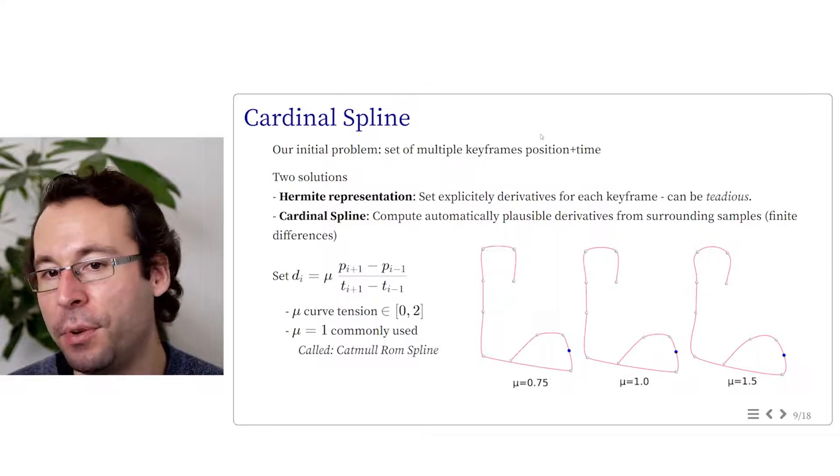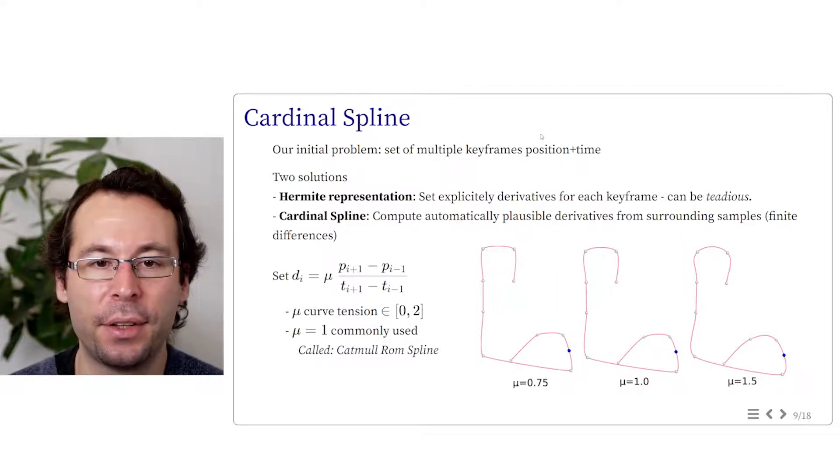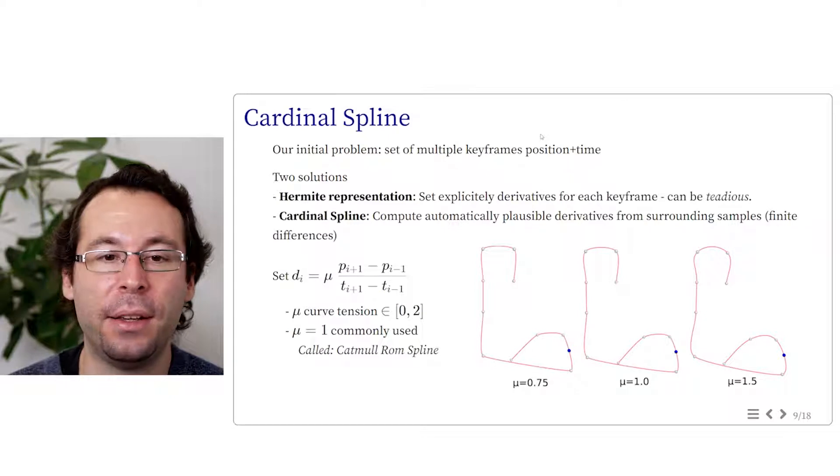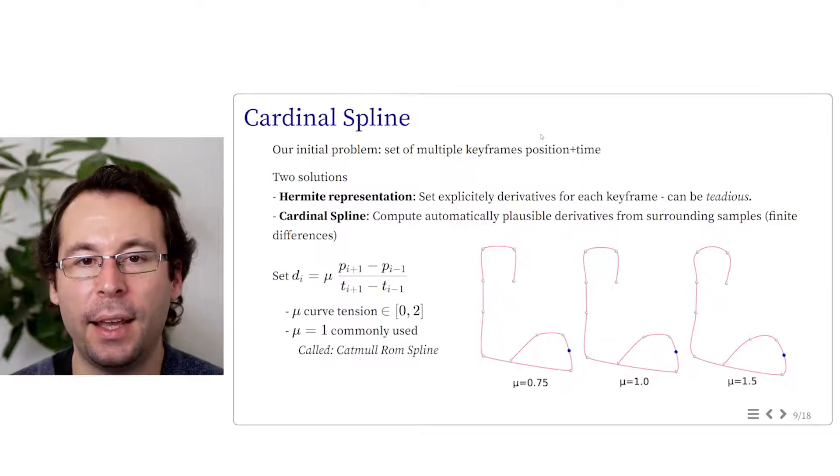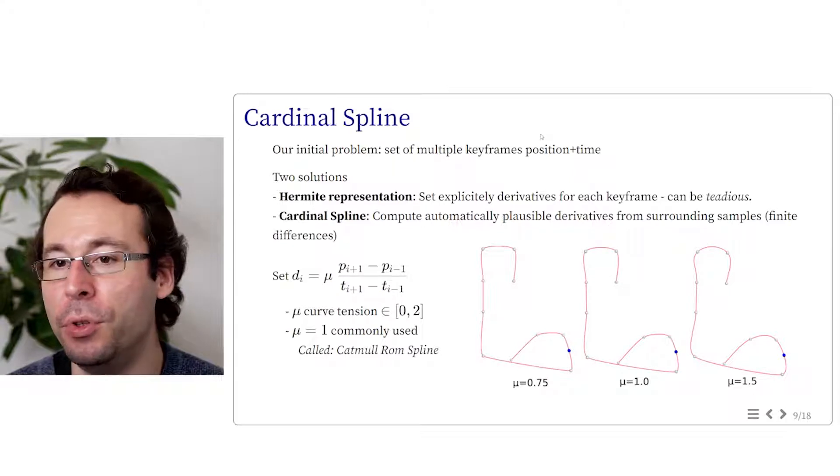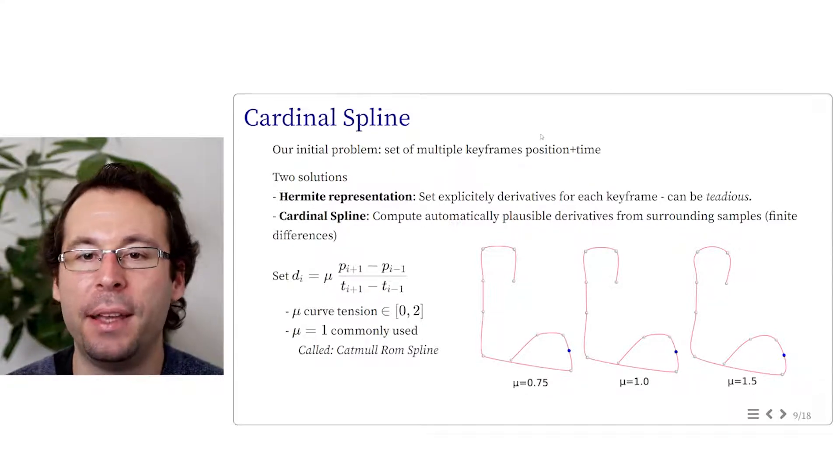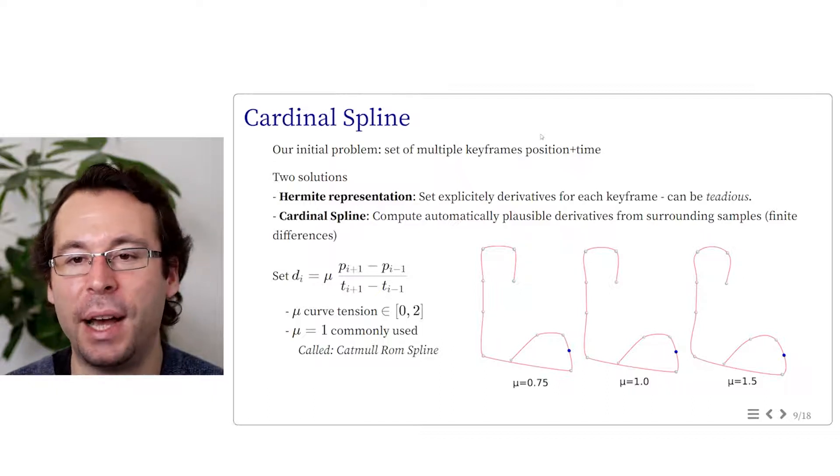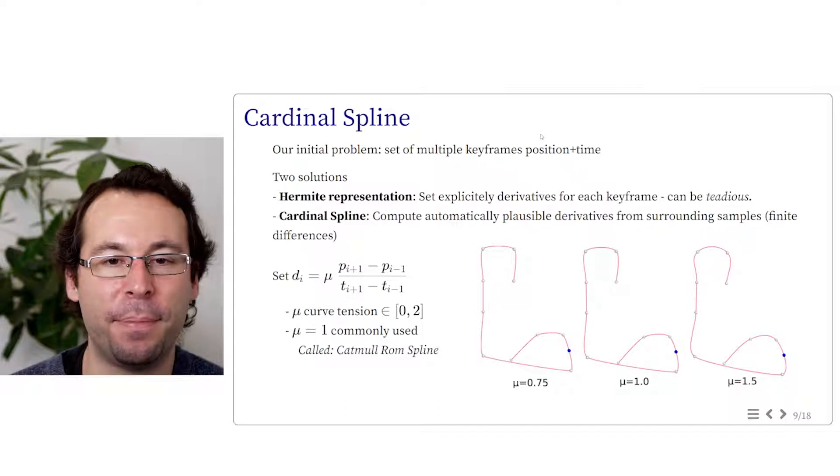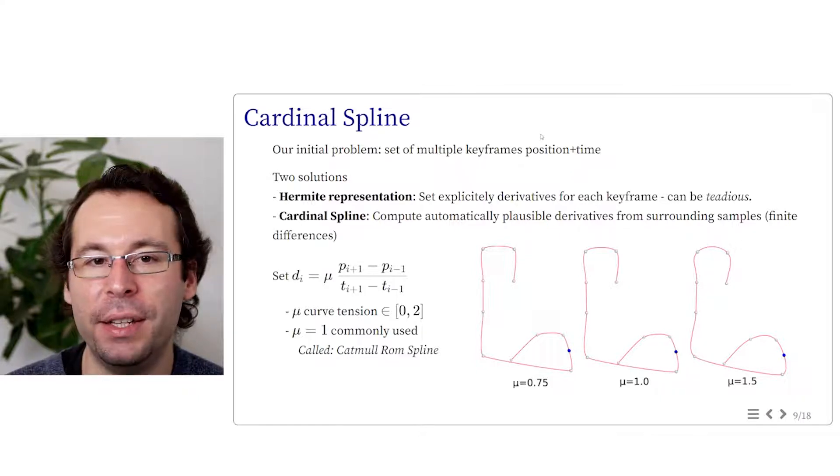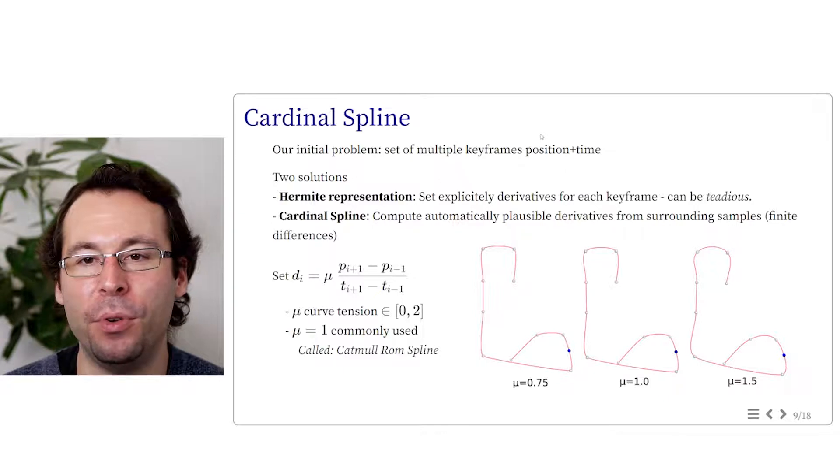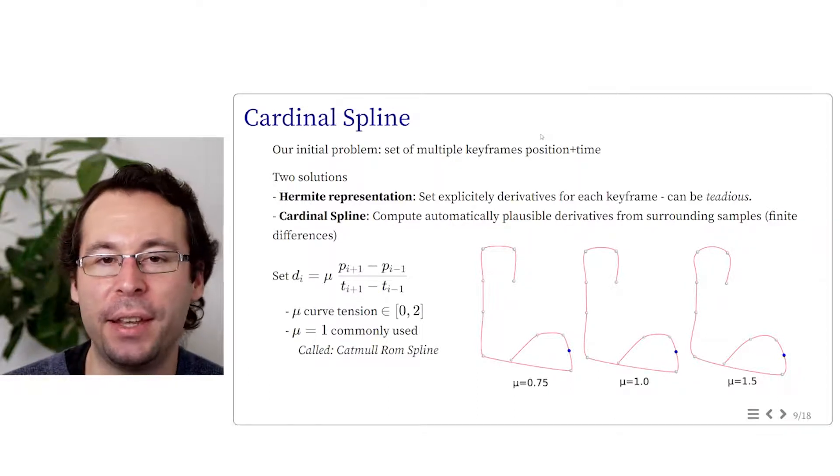And this leads to the formulation called cardinal spline. The cardinal spline is the Hermit curve where the derivatives are automatically computed using the first-order centered finite differences between the positions. We can express di to be equals to some parameter mu called the curve tension multiplied by p i+1 minus p i-1 divided by t i+1 minus t i-1. Taking mu close to 0 leads to more straight curves, while increasing the parameter mu leads to more rounded shapes. If we increase it too much, then you will generate unwanted loops.